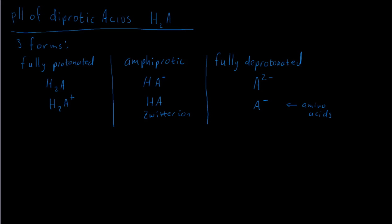This video is about finding the pH of diprotic acid solutions, and maybe even when you have one of the other forms of the diprotic acid that's been partially deprotonated. So how do we find the pH of those solutions, and how do we find the equilibrium concentrations of some of those species that might be in the solution?